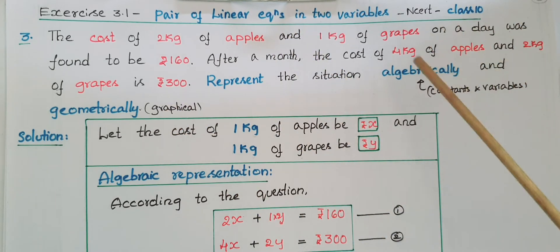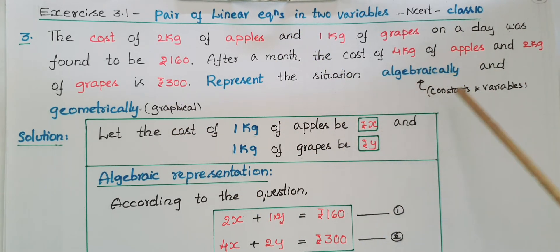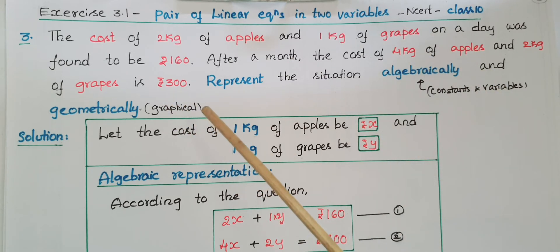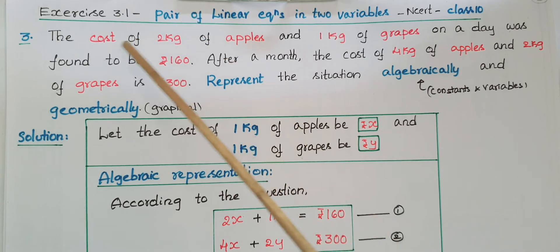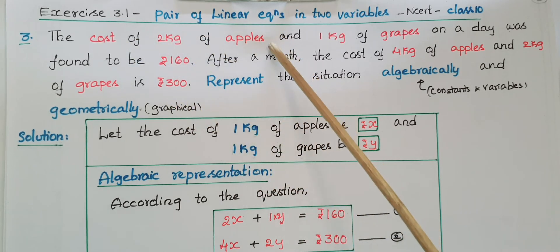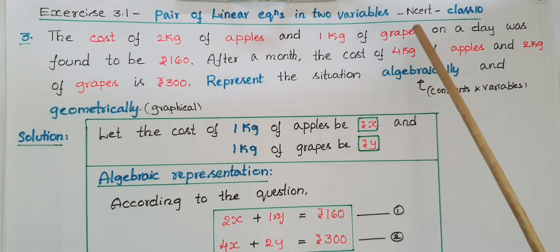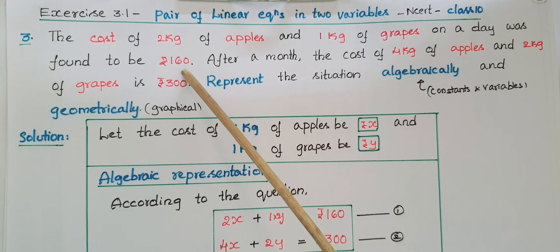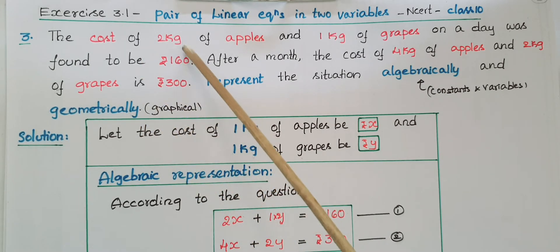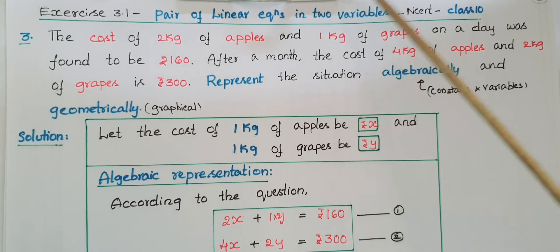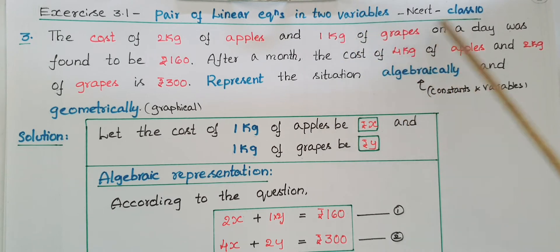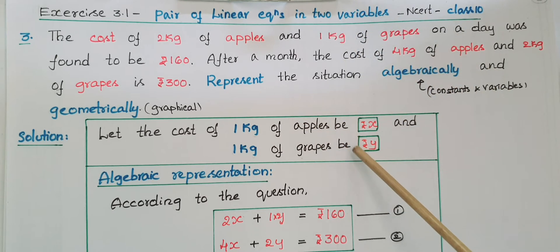Algebraically means using constants and variables, and geometrically means graphically. For the first sentence — the cost of 2 kg of apples and 1 kg of grapes is 160 rupees — let the cost of 1 kg of apples be x rupees and 1 kg of grapes be y rupees. So algebraically we can represent this according to the question.